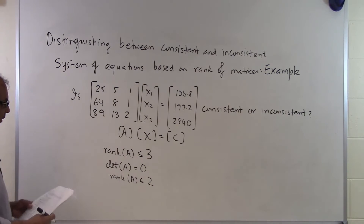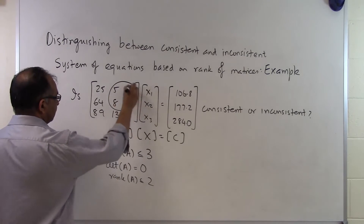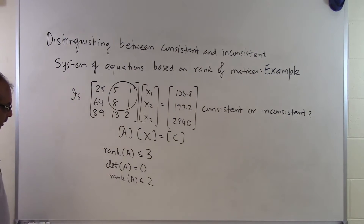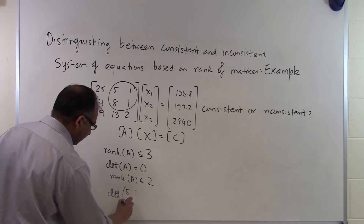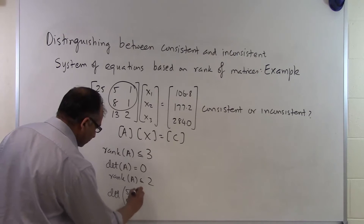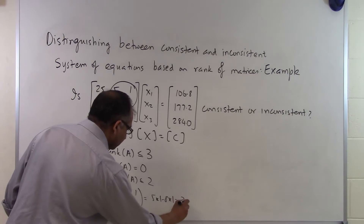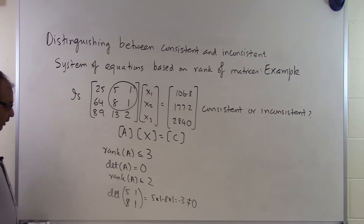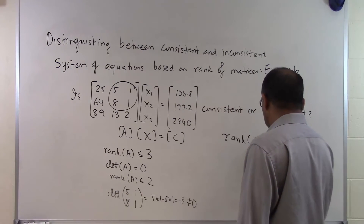Let's check if the rank is 2. Suppose we take a 2 by 2 sub-matrix — this one right here. The determinant of the sub-matrix with entries 5, 1, 8, 1 gives us 5 times 1 minus 8 times 1, which is minus 3 — that's not equal to 0. So I do have a 2 by 2 sub-matrix for which the determinant is not zero, which tells me that the rank of A is in fact 2.